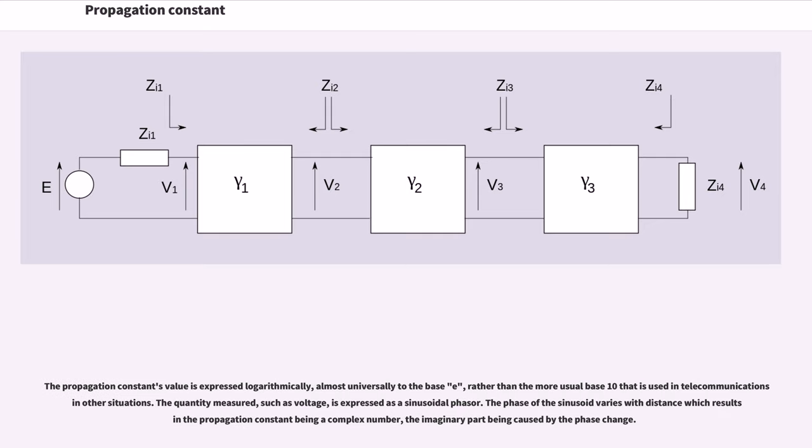The propagation constant's value is expressed logarithmically, almost universally to the base e, rather than the more usual base 10 that is used in telecommunications and other situations. The quantity measured, such as voltage, is expressed as a sinusoidal phasor. The phase of the sinusoid varies with distance which results in the propagation constant being a complex number, the imaginary part being caused by the phase change.